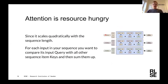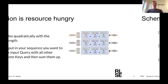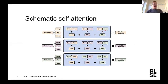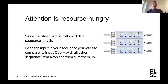For each word you want to produce a query and a key vector and check with every other word how important they are. This is quite resource-hungry because it scales quadratically with the length of the sequence — for very long sequences you will have to do a lot of comparisons. In practice, the weights produced are normalized into a distribution with a softmax. The important part is just to think of an embedding as a word, you produce a query and a key vector from it, and you check with other words how important they are. That is attention.